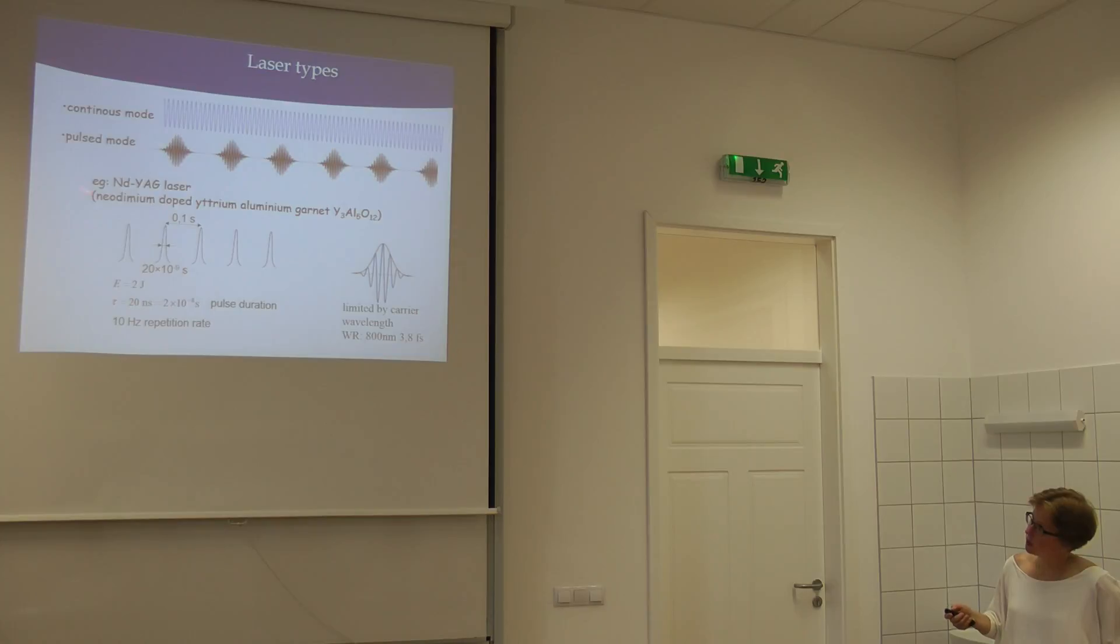Here I have an example. This is one of the lasers that uses the system where you double the frequency to get green light. This produces two joules of energy in each burst. The burst is 20 nanoseconds long. So it's 20 times 10 to the minus 9 seconds. And it comes at 10 hertz repetition rate.